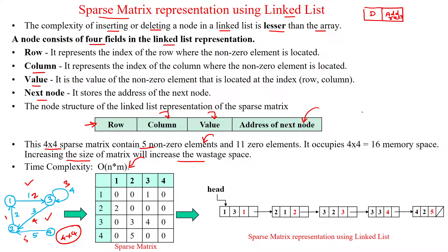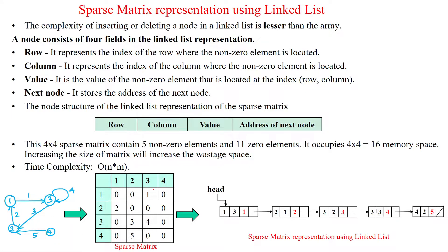Using the node structure, the first node is accessed using row number, column number, and value. The first field indicates the row number, the second field indicates the column number, and the third field indicates the data — which is the weighted edge available in the sparse matrix.